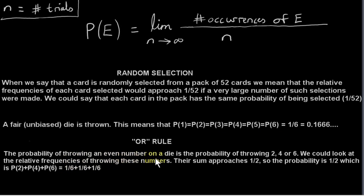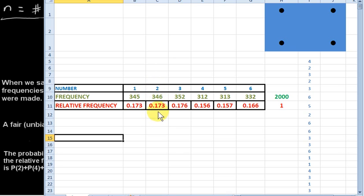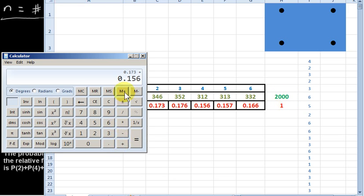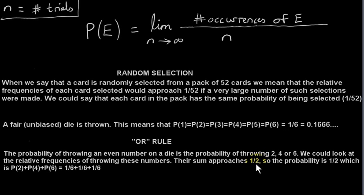Let's consider the probability of throwing an even number on a die. Well, that's the probability of throwing a 2, a 4, or a 6. We can look at the relative frequencies of throwing these numbers. So the relative frequency of throwing an even number would be 0.173 plus 0.156 plus 0.166, for the case where we have a frequency of 2,000 throws. So we sum these numbers: 0.173 plus 0.156 plus 0.166. This is the relative frequency for throwing an even number. And you see we get 0.495, which is very close to 0.5. So, as we saw, the sum approaches a half, and as we increase the number of trials, we will get closer and closer to 0.5. That means that the probability is a half.